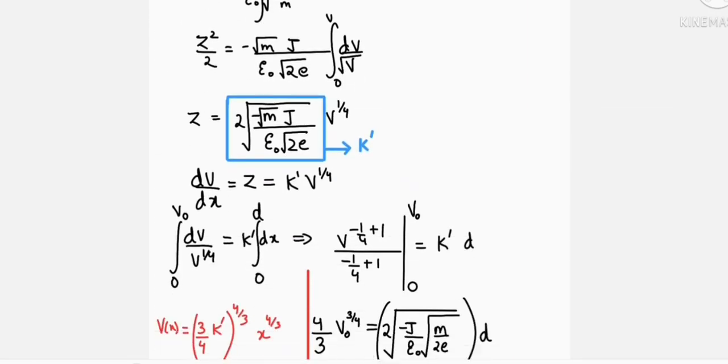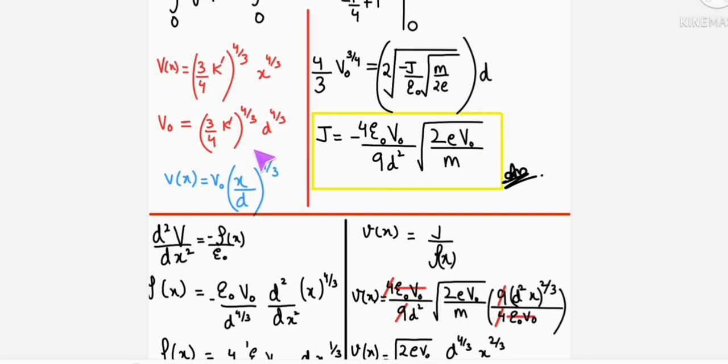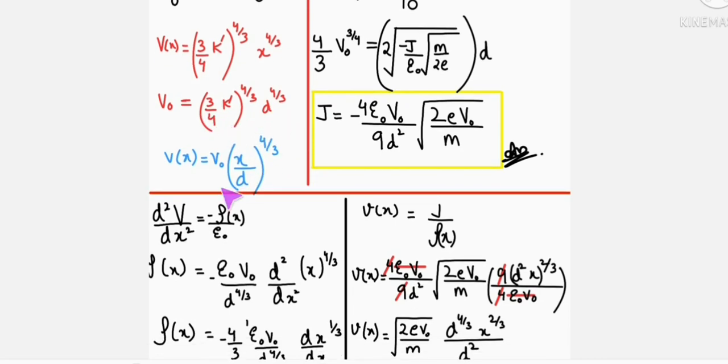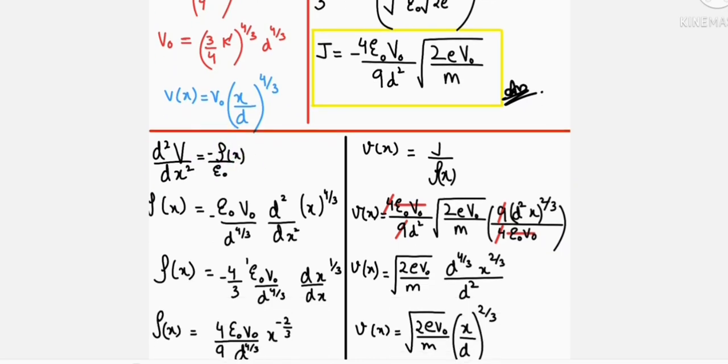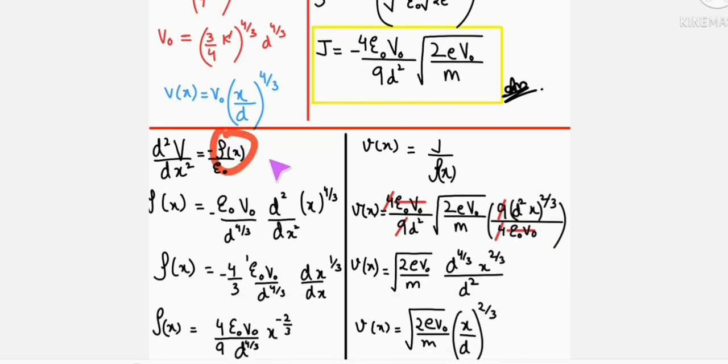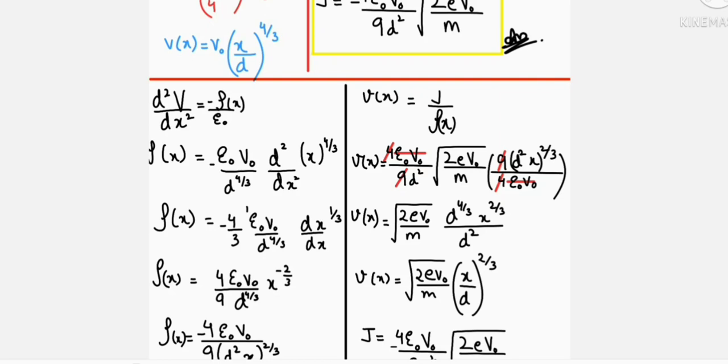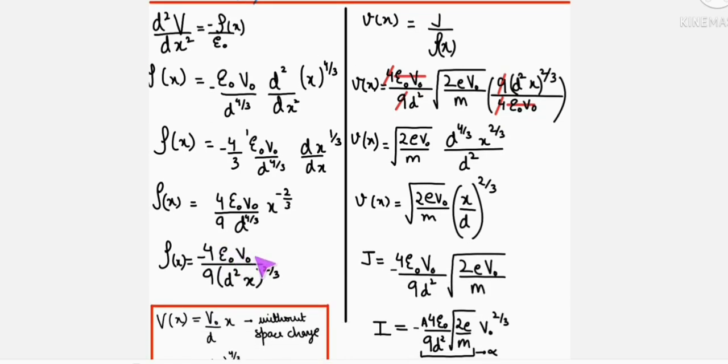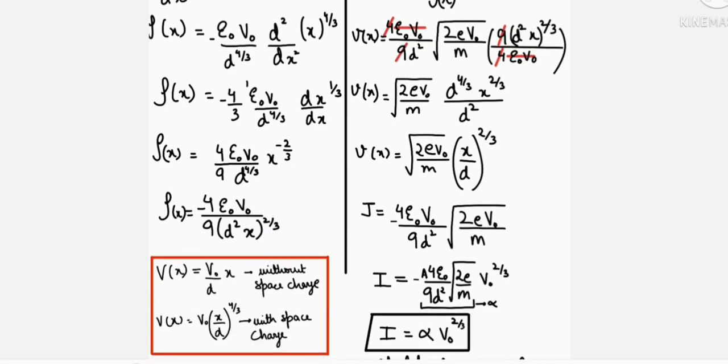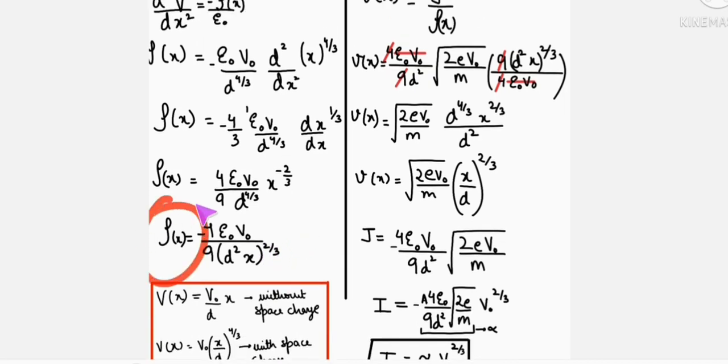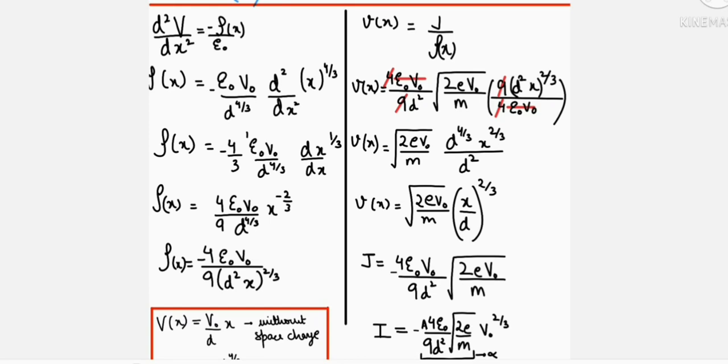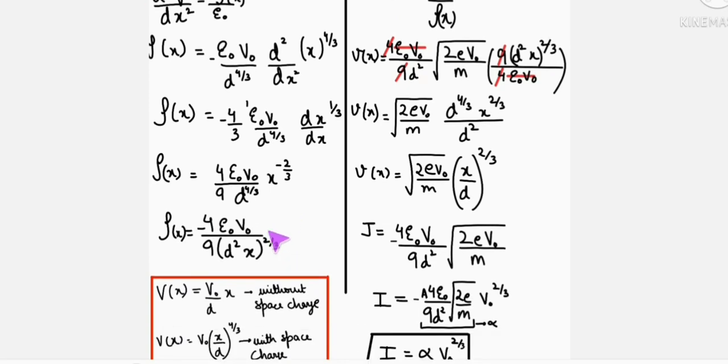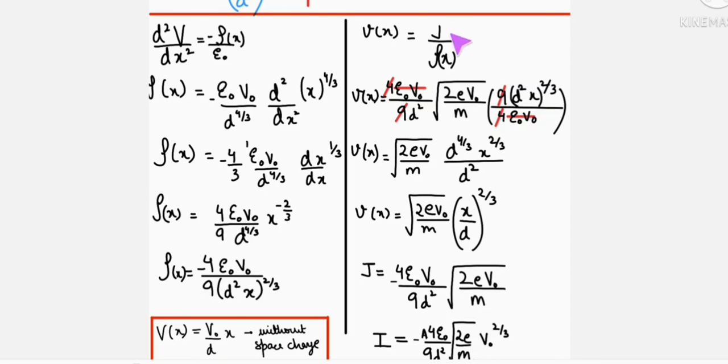Let's find rho now. Rho is the space charge density. We know potential as a function of X, so from here we get the value of rho as a function of X. It will come out to be minus 4 epsilon naught V naught upon 9 D square X whole square raised to 2 by 3. This is the value of volume charge density as a function of X. Here we can see that as X is greater, rho will be reduced.